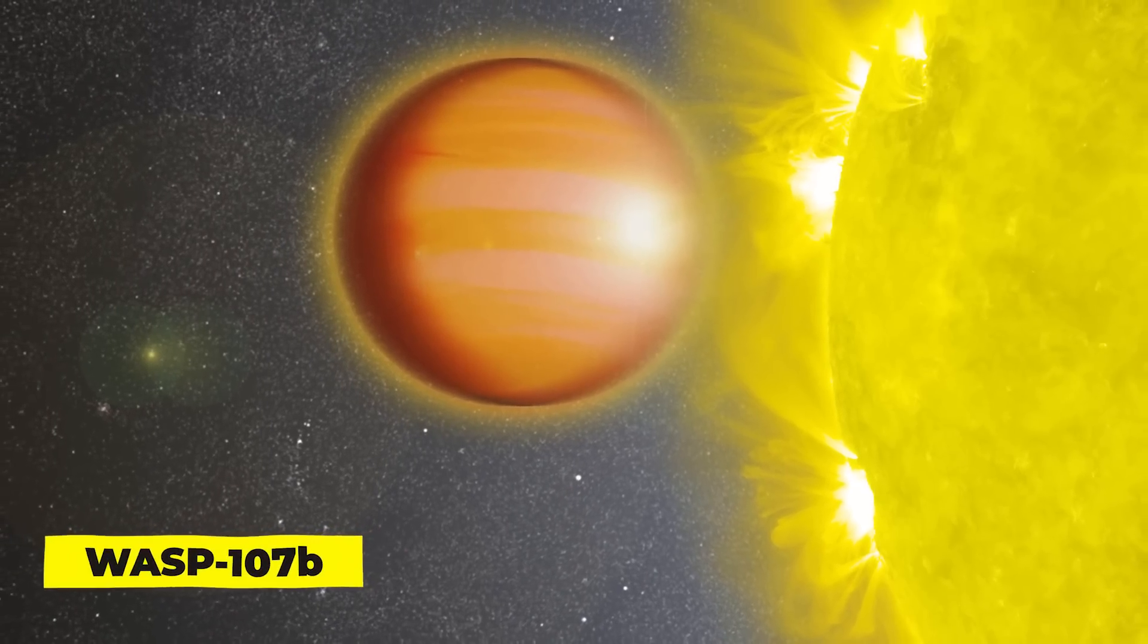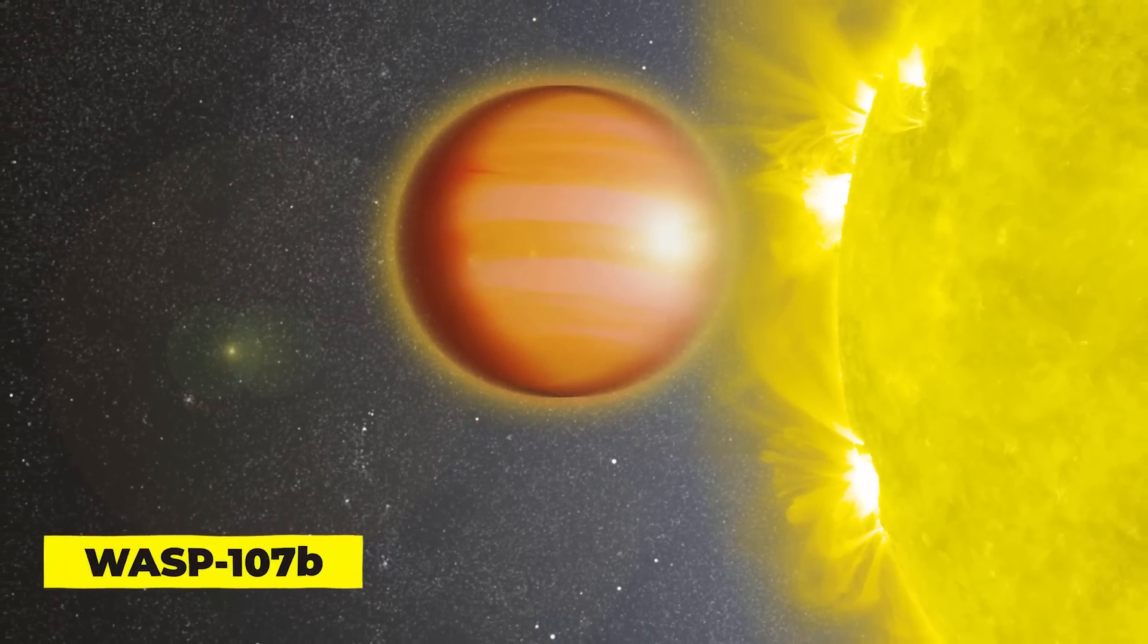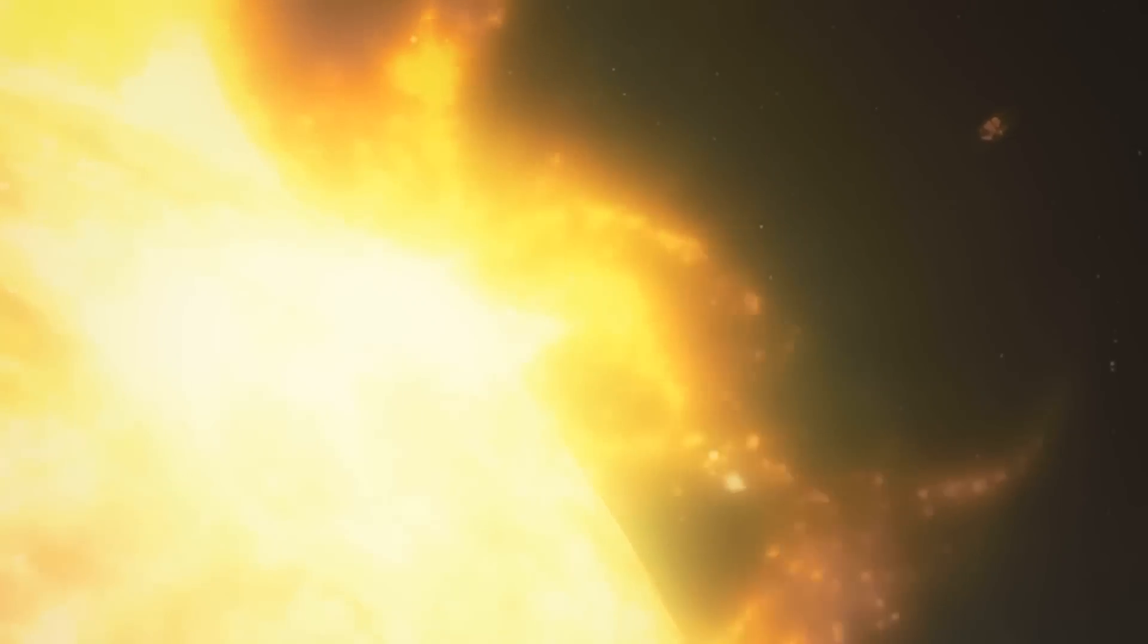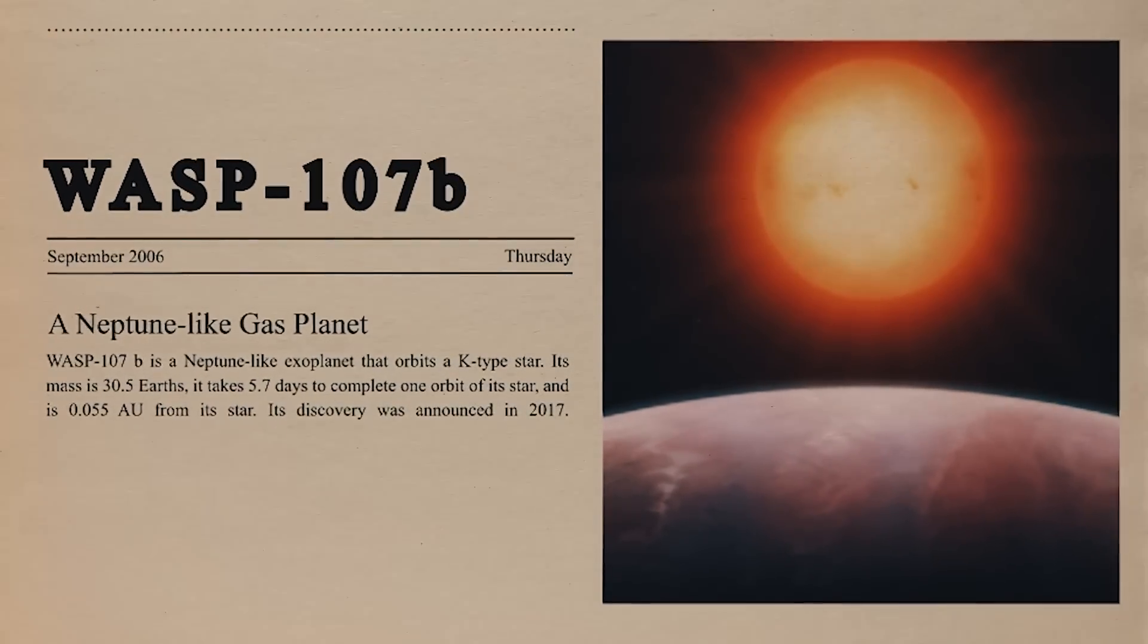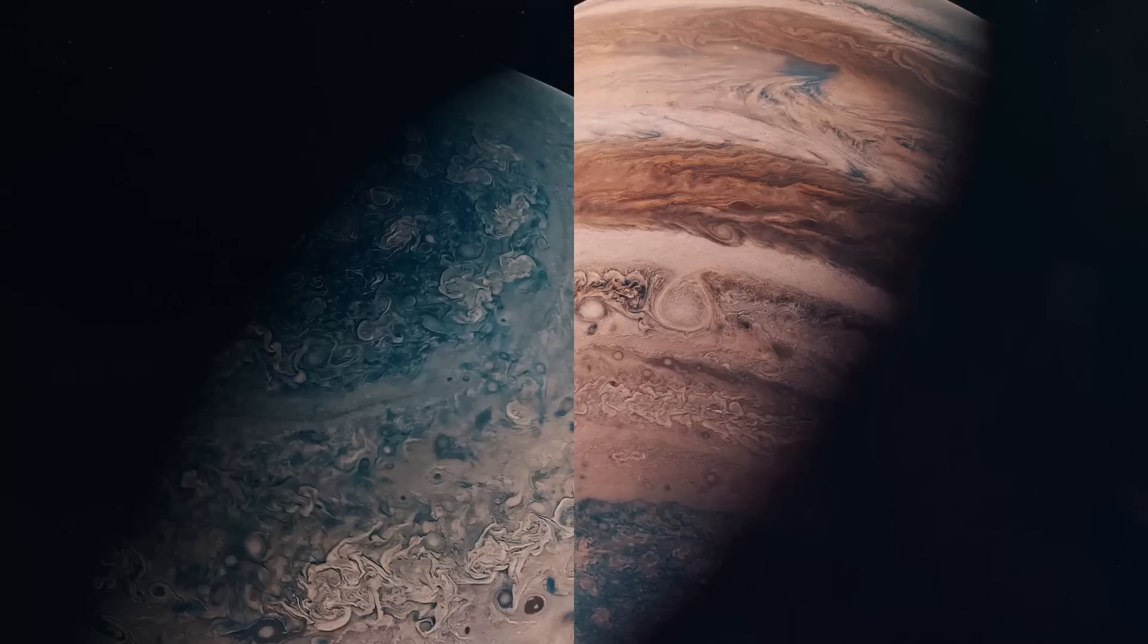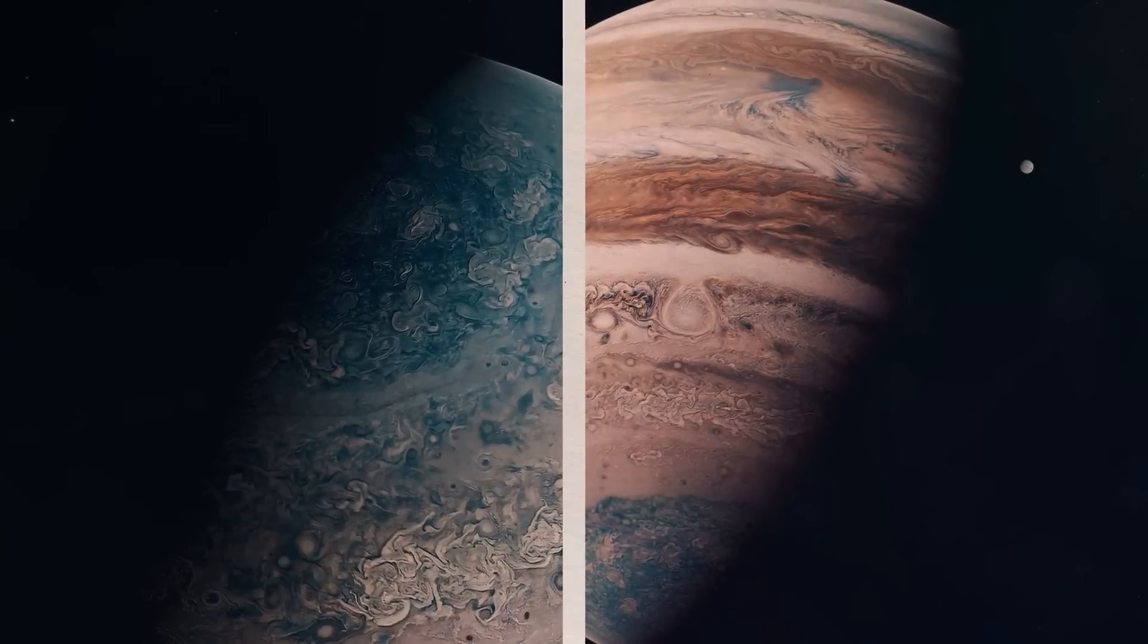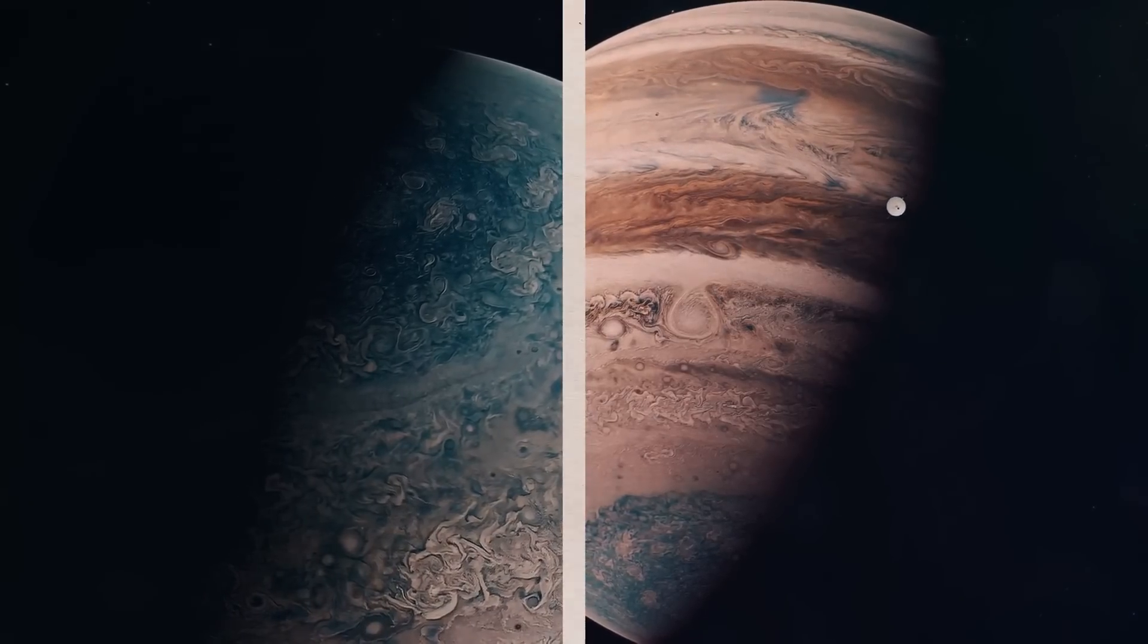WASP-107b. Weird exoplanets seem to be abundant in space, and some of them have characteristics that make it difficult to believe that these heavenly bodies actually exist. This strange planet, known as WASP-107b, has the density of cotton candy and forces scientists to re-evaluate how gas giants develop. Although the exoplanet is only 30 Earth masses, it is almost the same size as Jupiter. However, Jupiter is 300 times bigger than Earth.